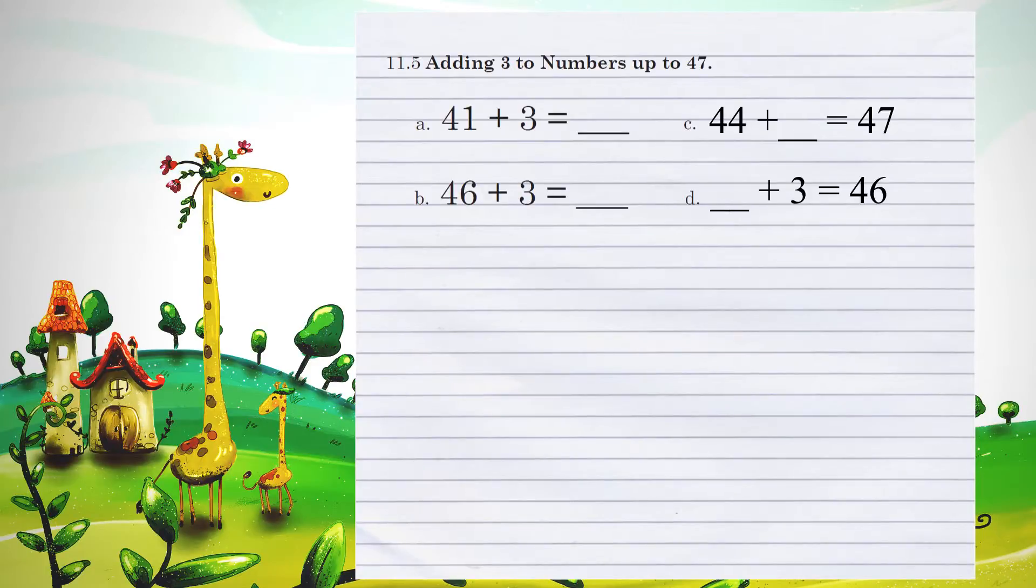Unit 11.5, adding 3 to numbers up to 47. Example A. 41 plus 3. When we add the 1s columns together, 1 and 3 is 4, so 41 plus 3 is 44.